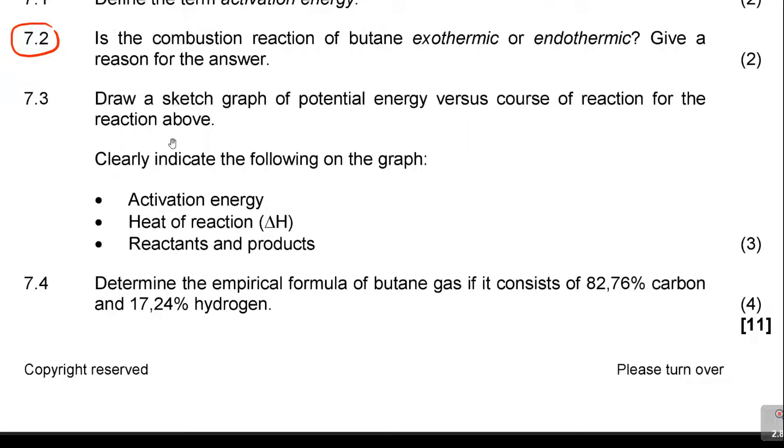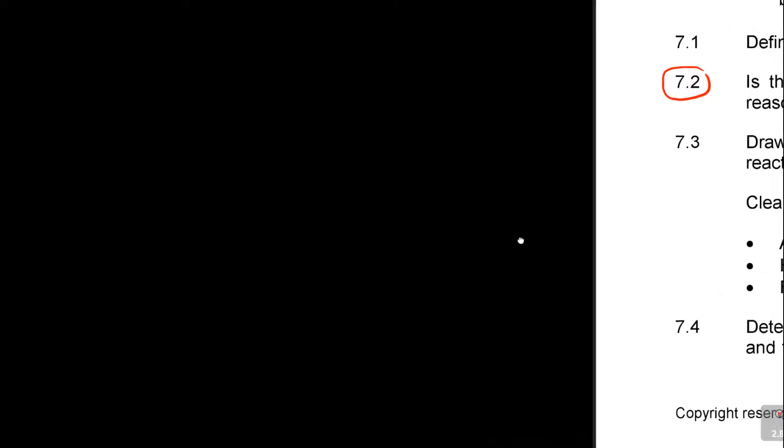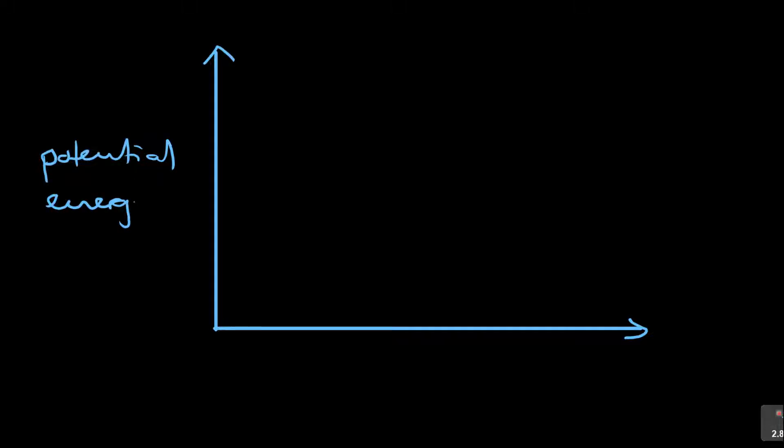Moving on. Draw a sketch graph of potential energy versus course of reaction for the reaction above. Clearly indicate the following in the graph: activation energy, heat of reaction, reactants and products. You must have practiced during school. So you are drawing a graph for the potential energy versus time graph of an exothermic reaction. So this is the potential energy, and then this is the time for the exothermic reaction.